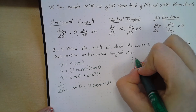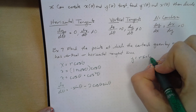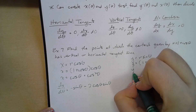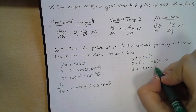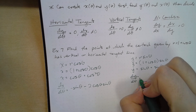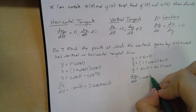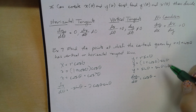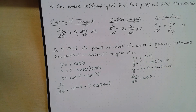Now our y coordinate: y = r sin(θ), so y = (1 + cos θ) sin θ = sin θ + sin θ cos θ. And dy/dθ equals cosine theta minus... I'm going to pause while I work through the product rule.